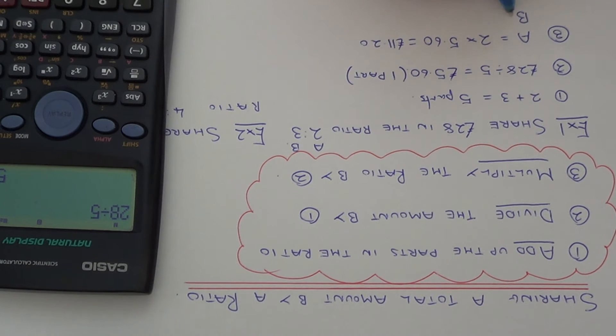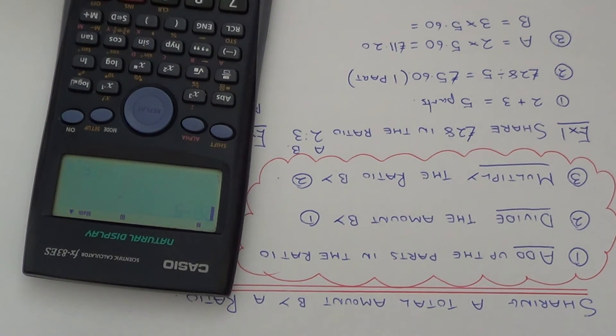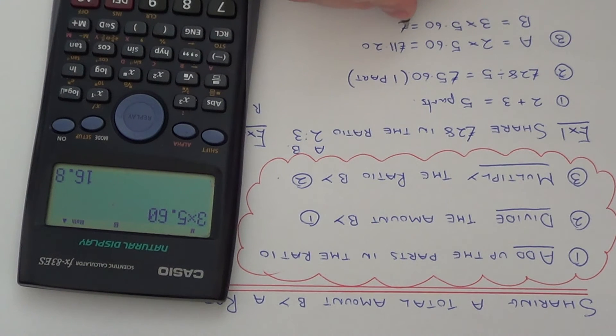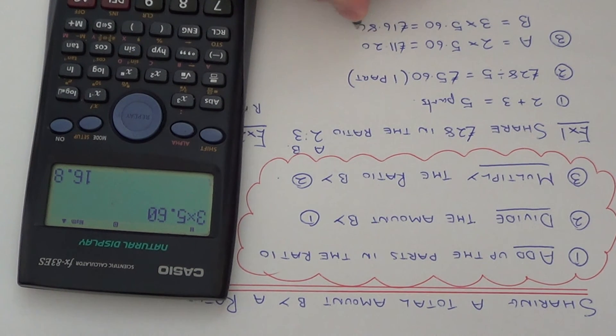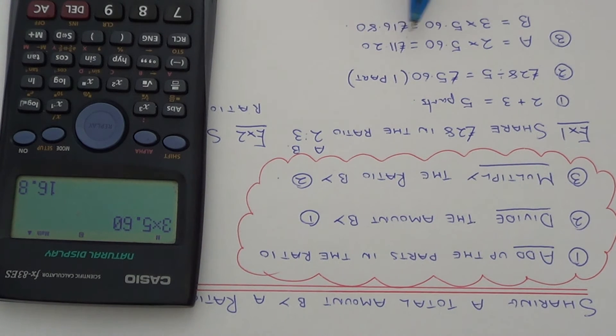And person B is getting three parts of the money. So we need to do three times £5.60. So I'll do this in the calculator. That's £16.80. And those are our two final answers. So A gets £11.20, B gets £16.80.